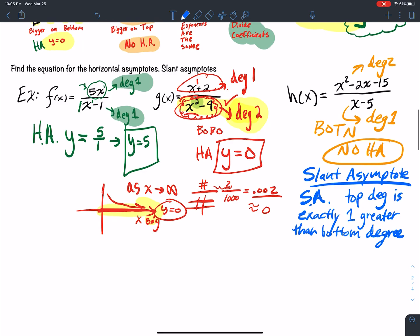My SA happens when the top degree is exactly 1 greater than the bottom degree. If this is the case, so degree 2 divided by degree 1, that's exactly what's going on here. That's 1 bigger than the denominator. So how do I find the slant asymptote? I've got to use division. To use division, I've got to think back to synthetic division.